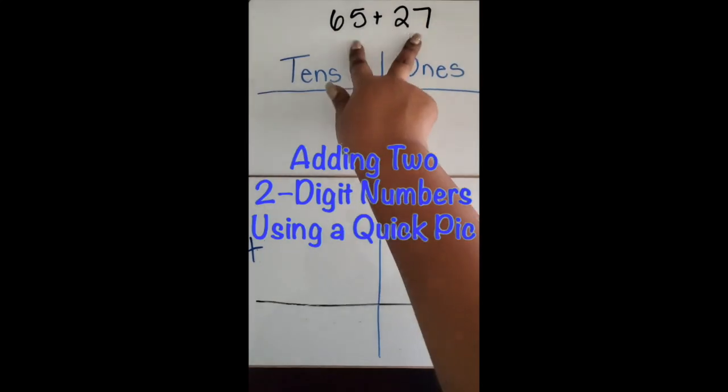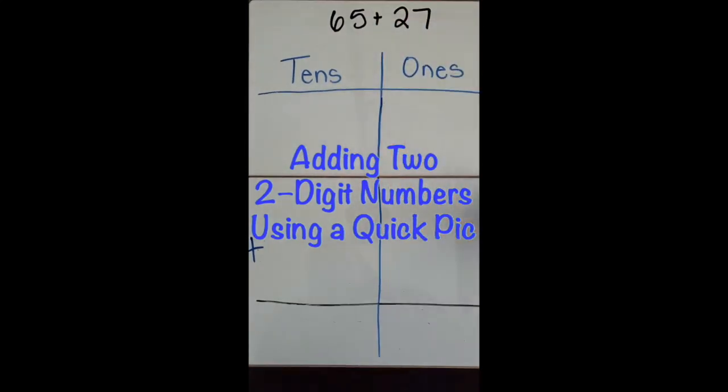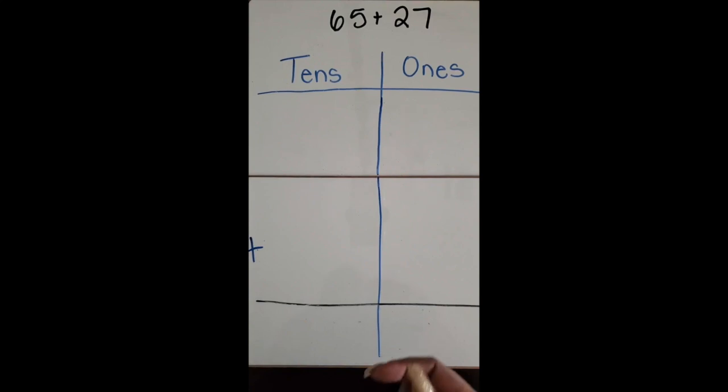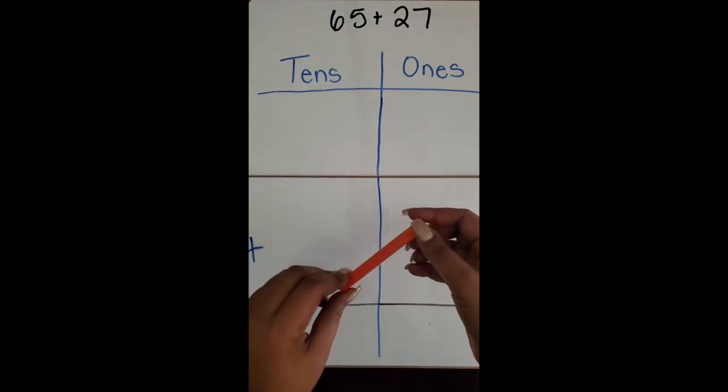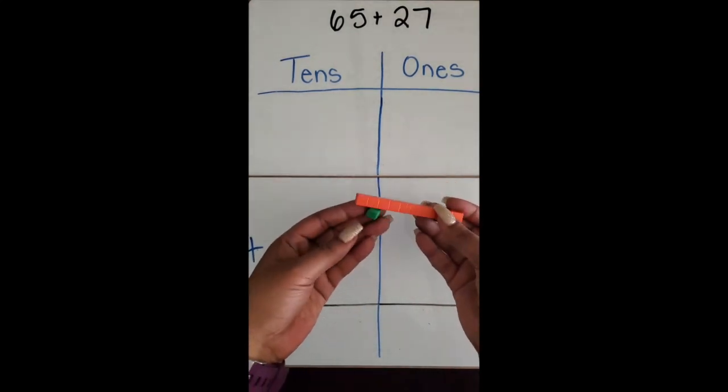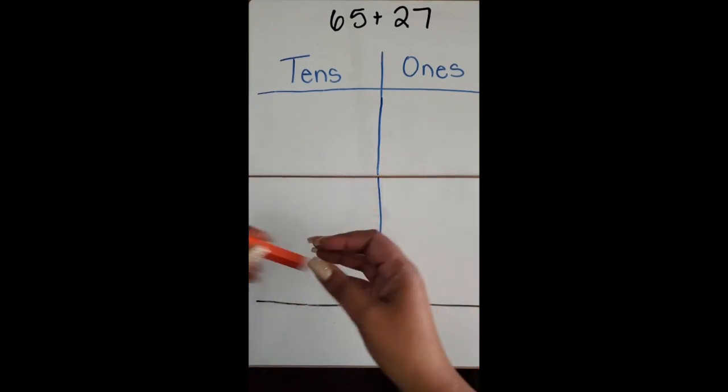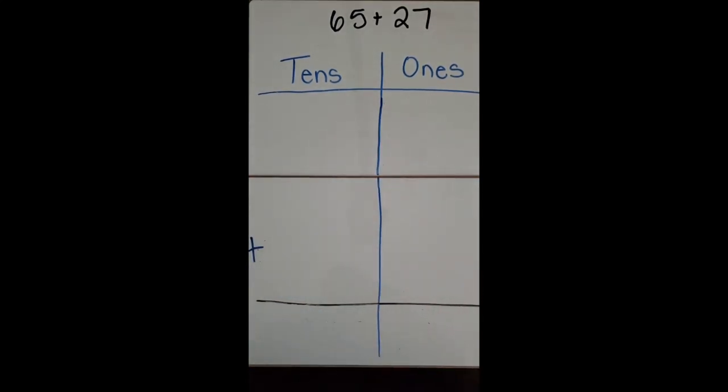We're going to add two two-digit numbers together using a quick pic of base 10 blocks. If you don't have these base 10 blocks to use as a concrete model, you can always draw a quick pic of the base 10 blocks.